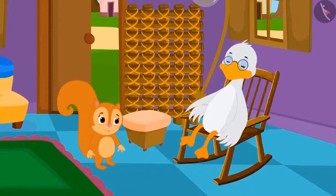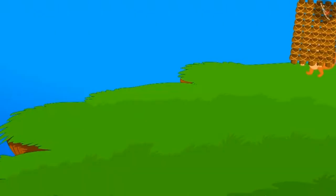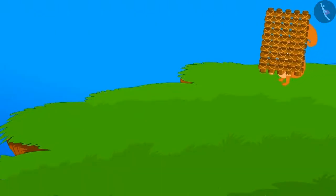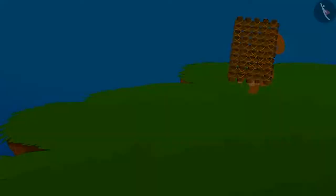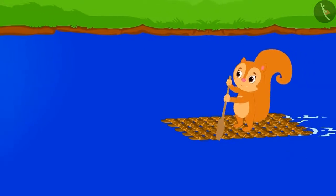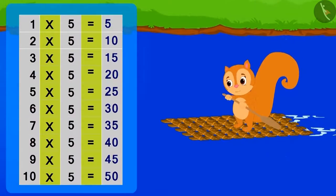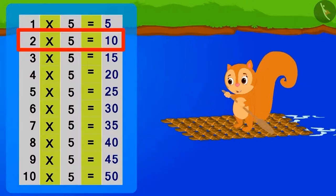Chanda started dancing happily. Chanda thanked Uncle and went with her unique boat to sail in the river. Chanda was humming the table of 5 while sailing in her boat. 5 ones are 5,